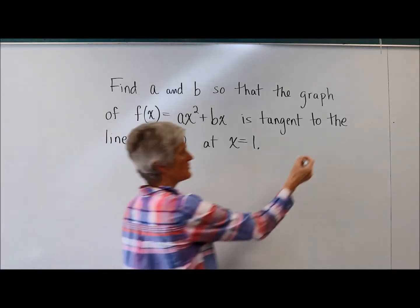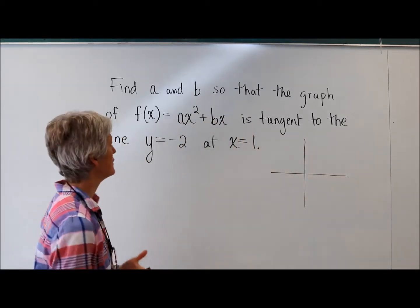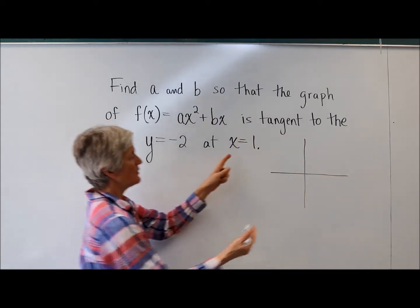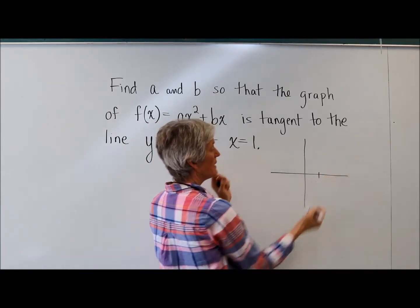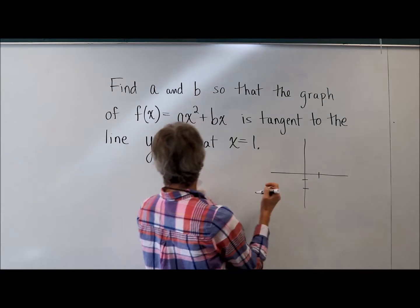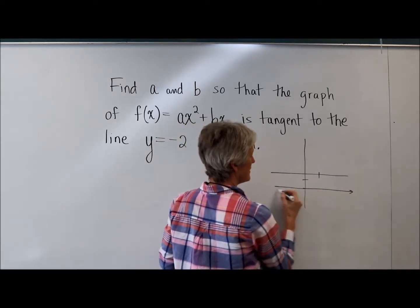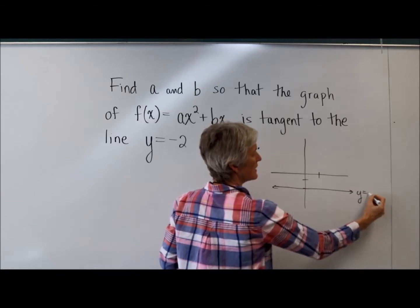All right. I'm going to draw a picture because pictures, even if I'm not sure exactly what to draw, they can be helpful. So let's see. I know this is happening when x is 1. The line y equals, sorry, y equals negative 2. There's the line y equals negative 2.